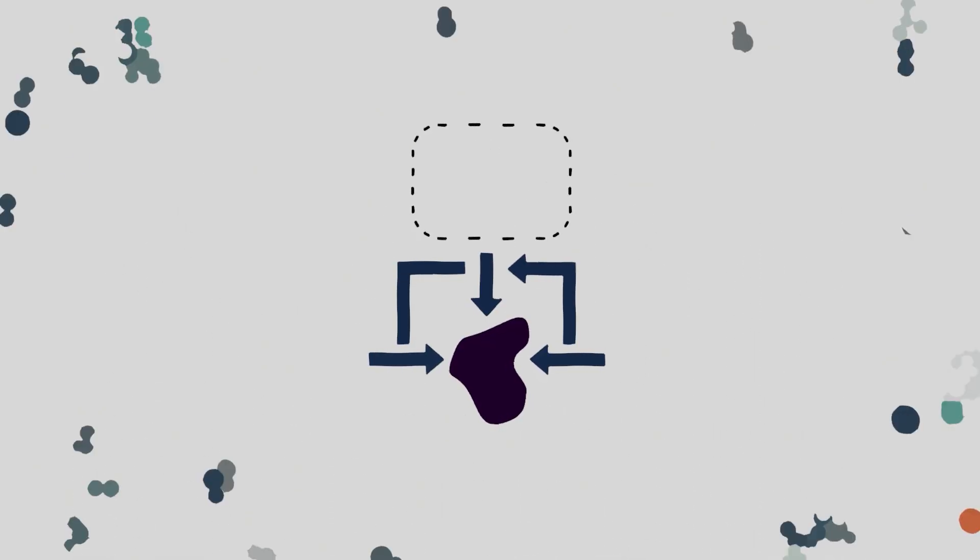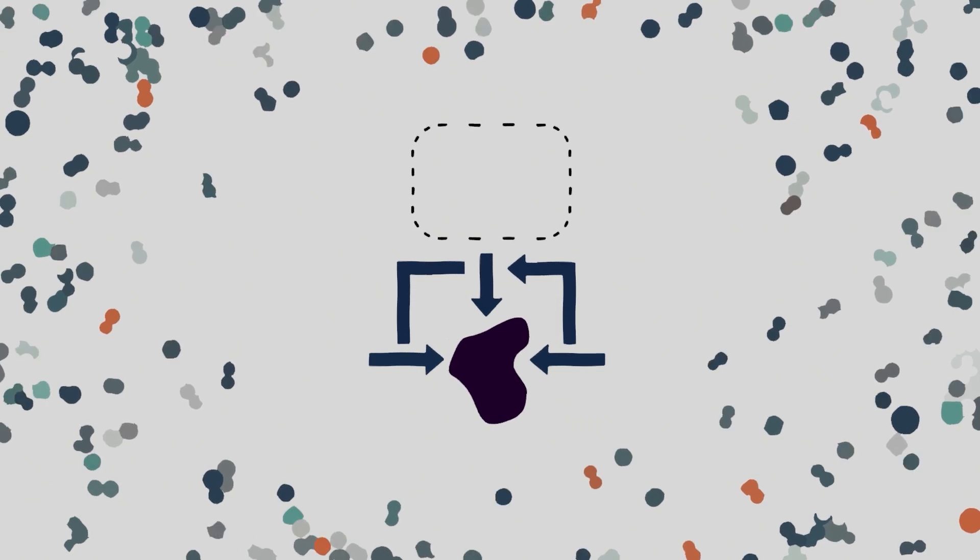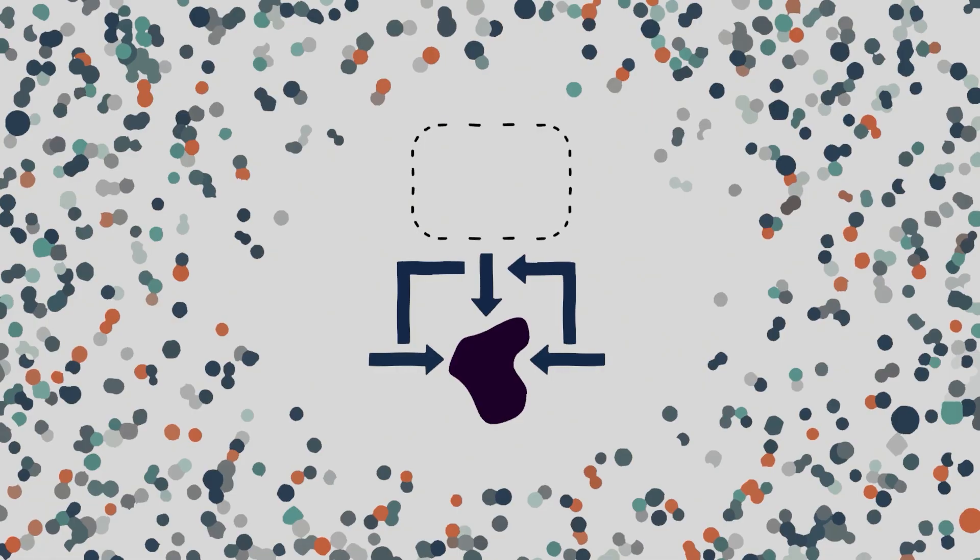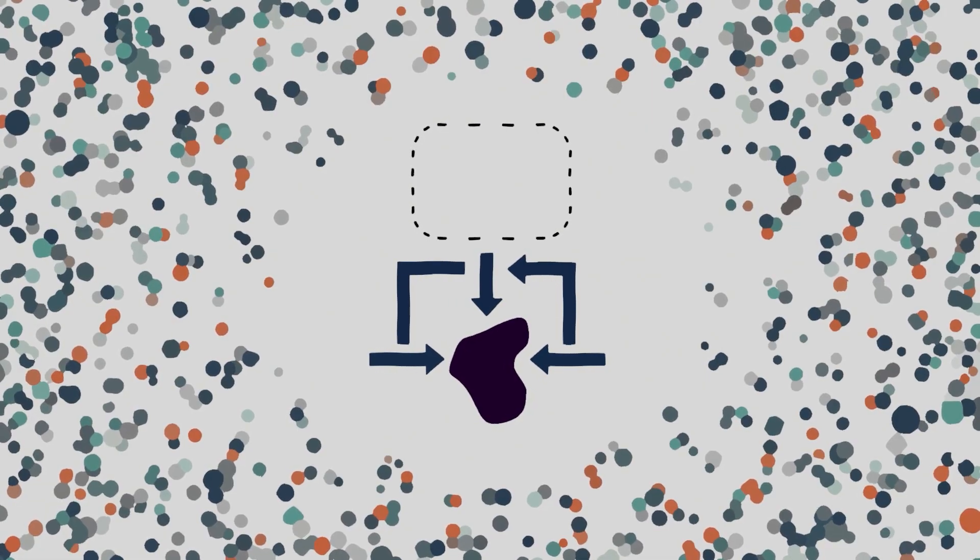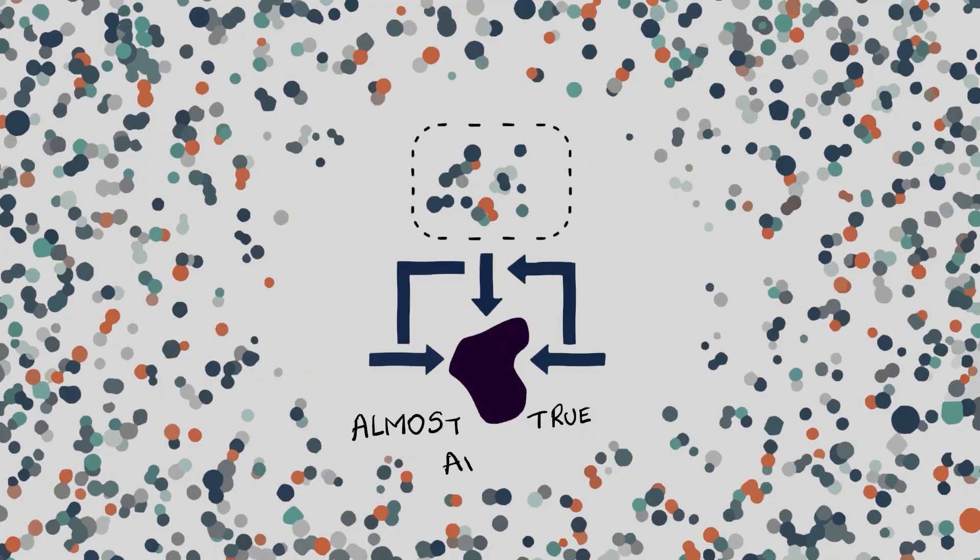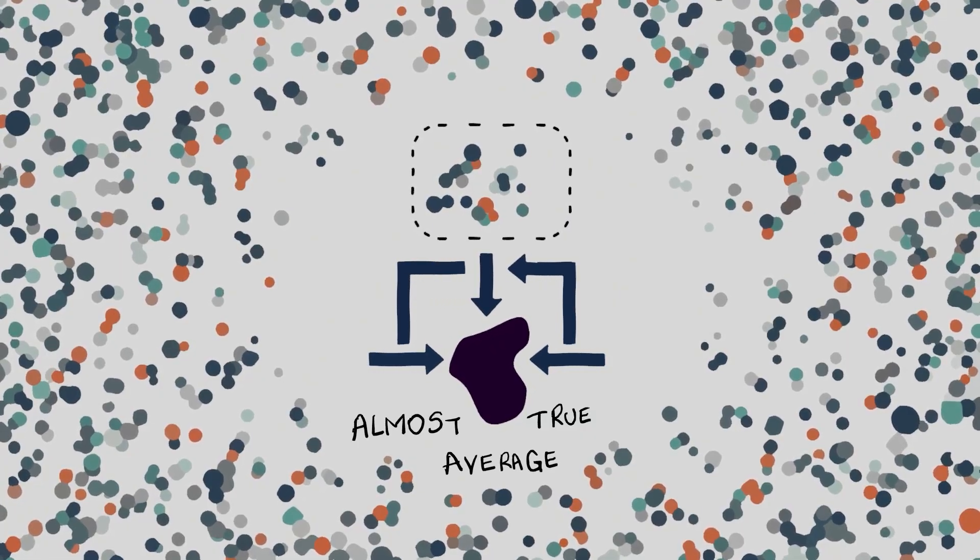But here's the key idea. Monte Carlo isn't averaging everything. It's averaging just a handful of random samples from an impossibly large set of possibilities. And somehow, that small random slice is still enough to approximate the truth.